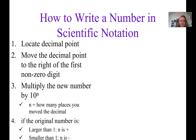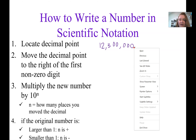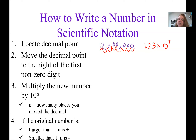Here are our steps. We're going to practice with a few different numbers. First, we convert a large number to scientific notation. The decimal place isn't shown for large numbers, but we know it's at the very end. We move it to the right of the first non-zero digit, counting 1, 2, 3, 4, 5, 6, 7 places. So we rewrite it as 1.23 times 10 to the 7th, keeping the exponent positive because our number in standard notation was larger than 1.